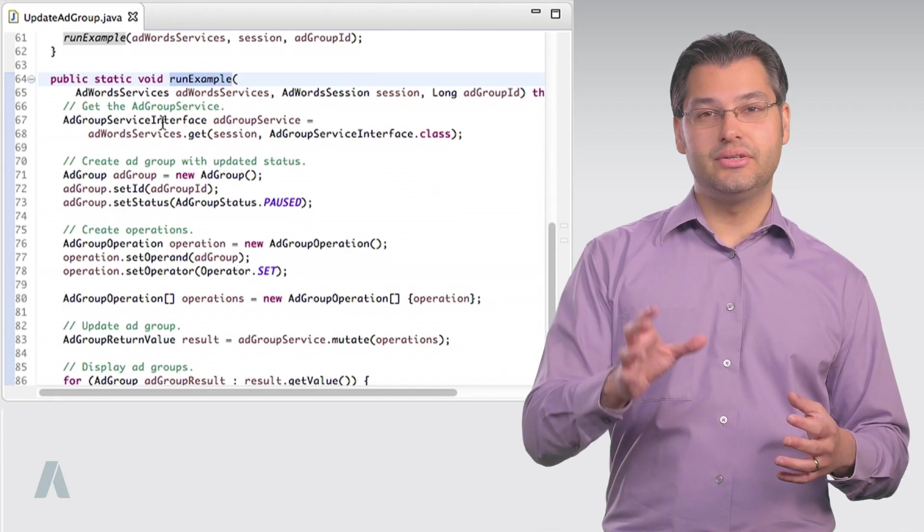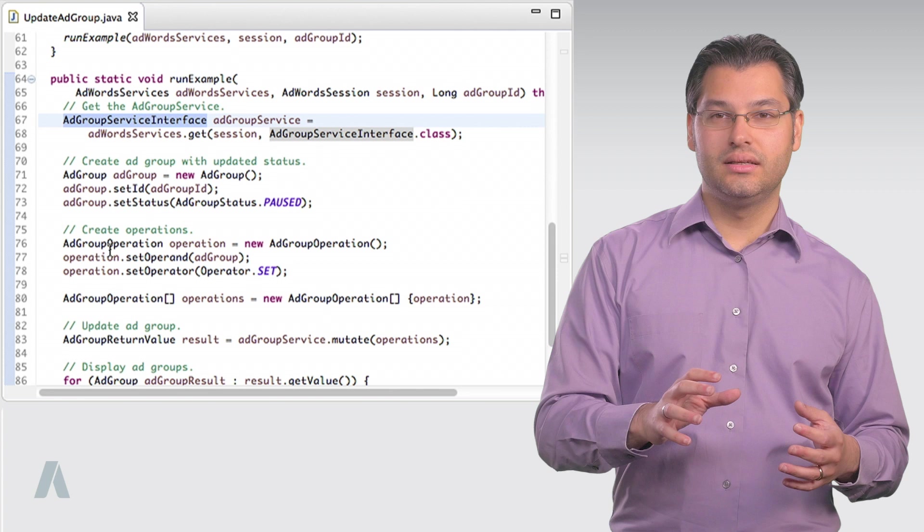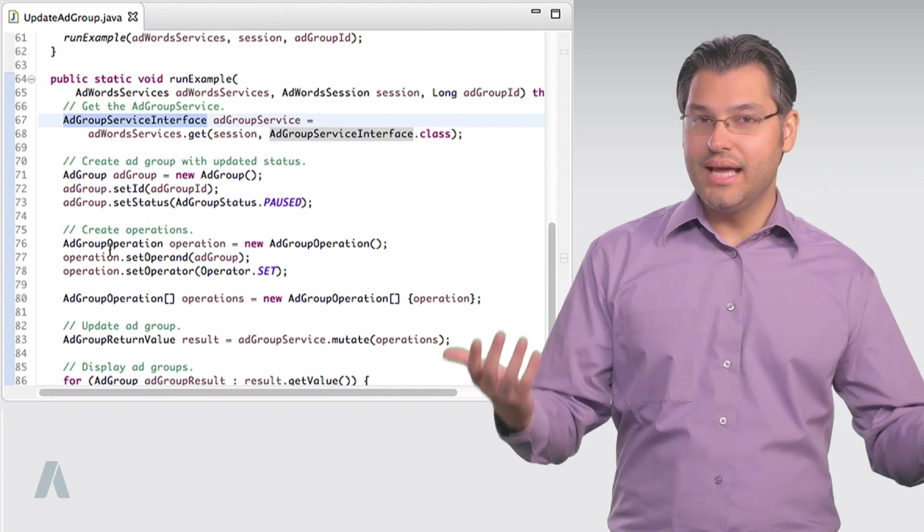As usual, the run example method has the interesting code. First, it gets a reference to the ad group service interface because it'll be making an update to an ad group.